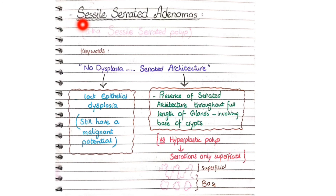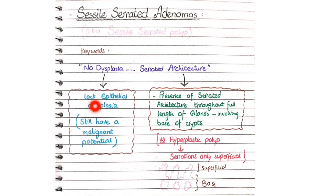Other than these architectural types, there is a special variant called sessile serrated adenoma, also known as sessile serrated polyp. A key feature of sessile serrated adenomas is that they characteristically lack dysplasia, unlike typical colonic adenomas where epithelial dysplasia is a hallmark feature.